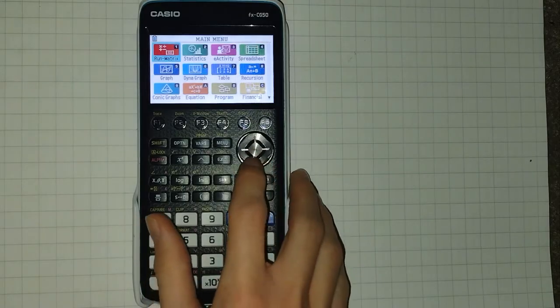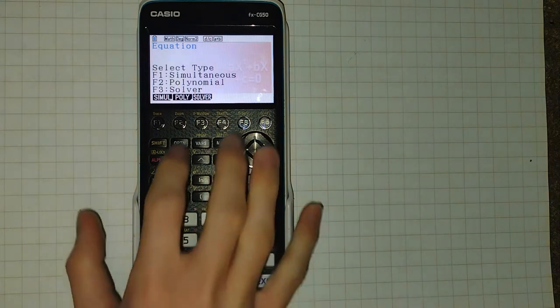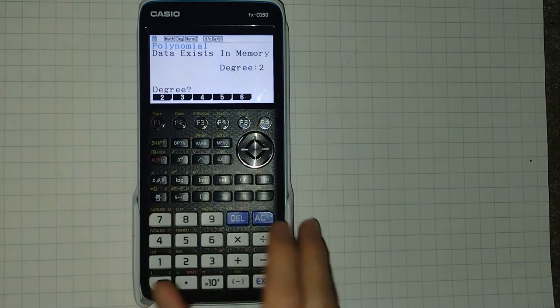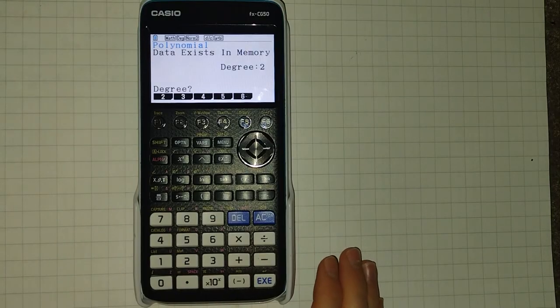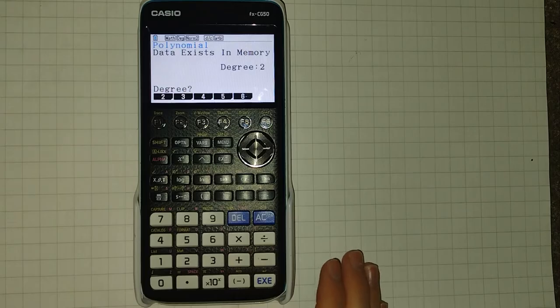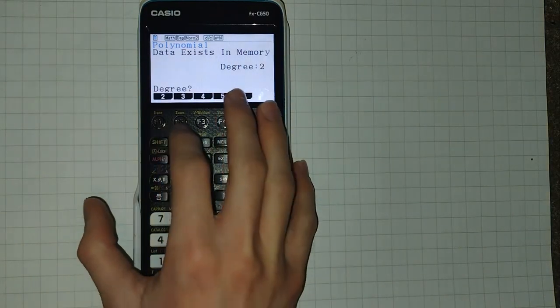We could also use the dedicated equation mode here. I'm going to start by looking at the polynomial solver. We select the degree of the polynomial. That is the largest power of x that we have. So for example, quadratic is degree two, cubic's degree three. We'll look at a cubic.